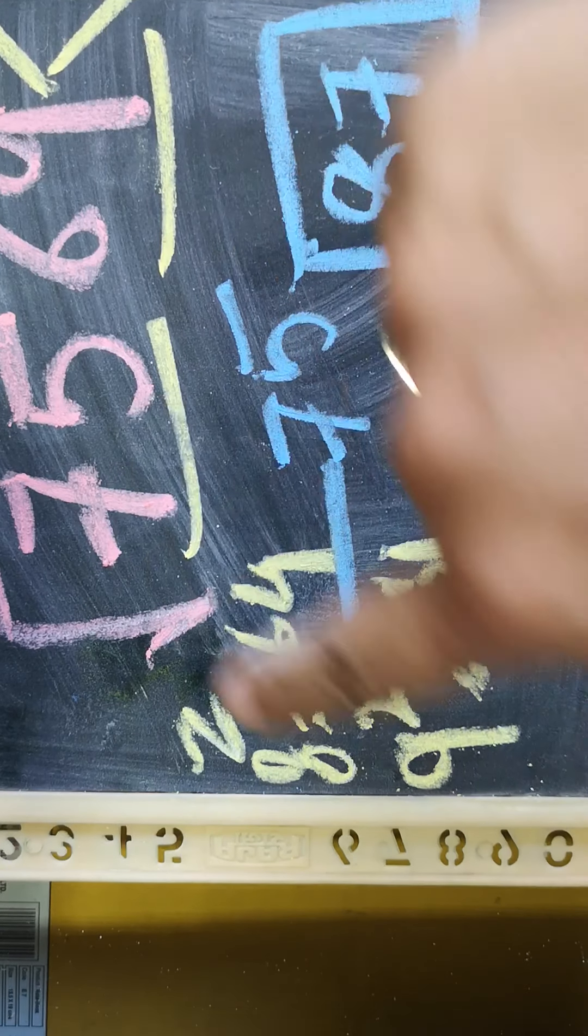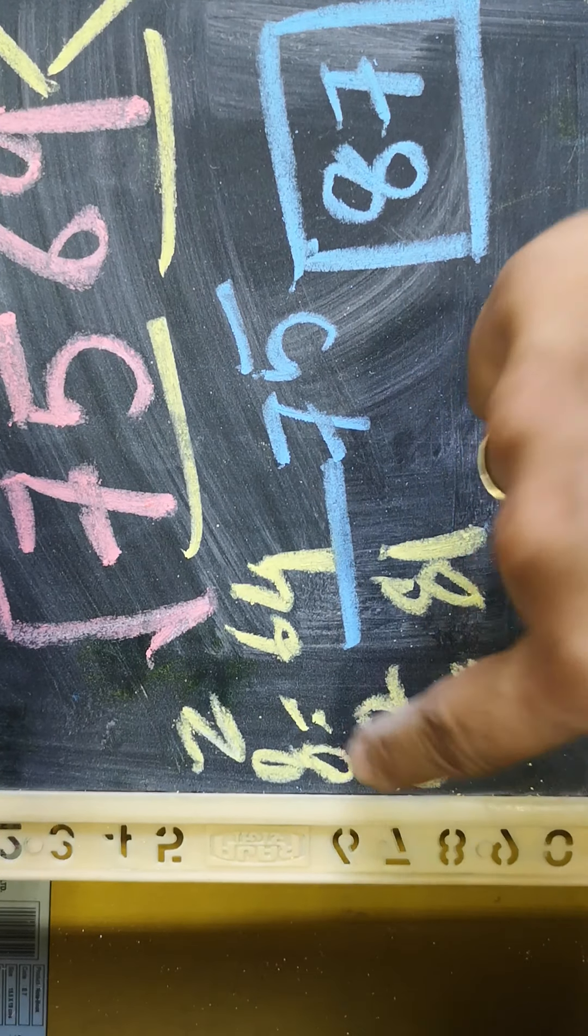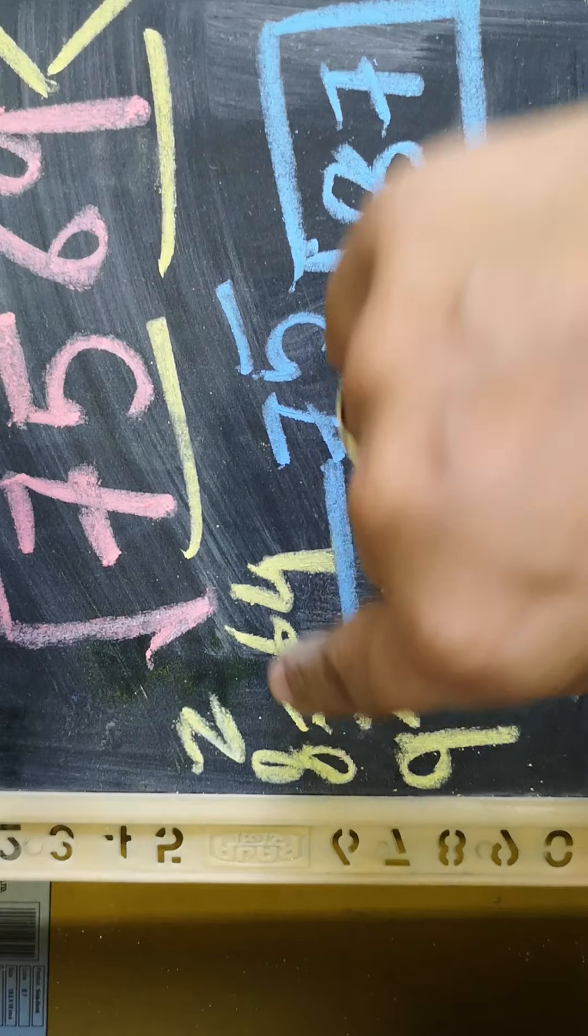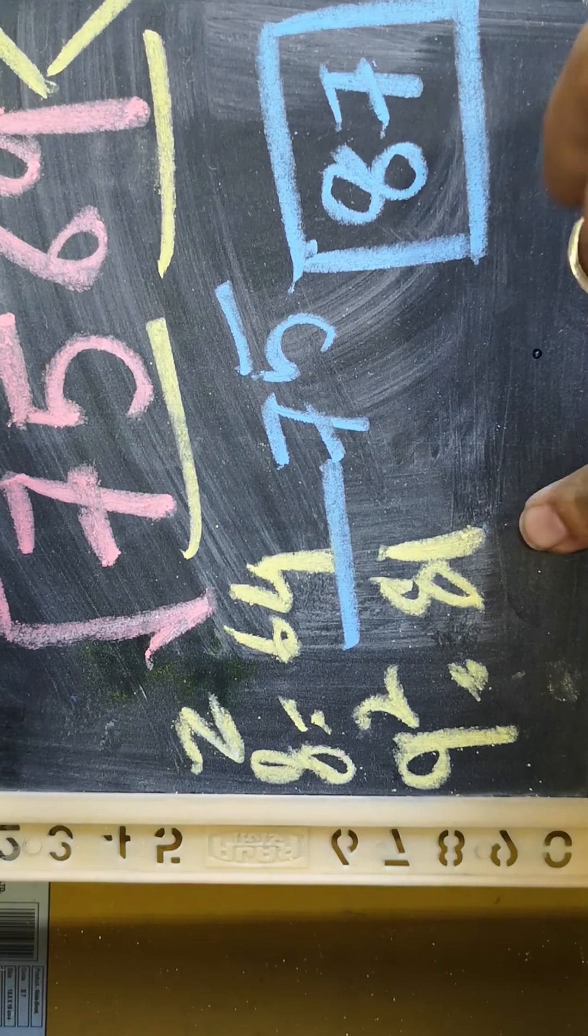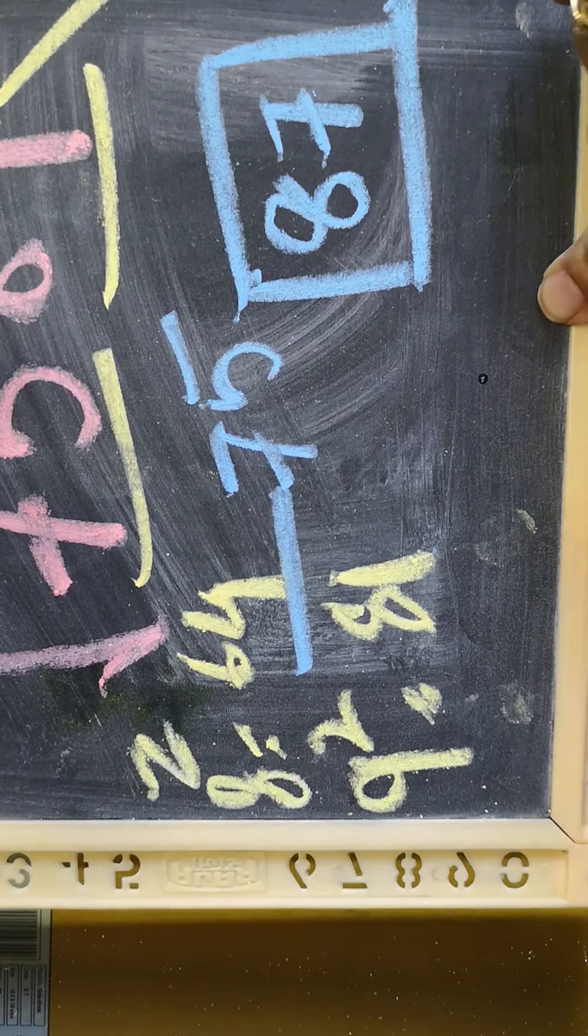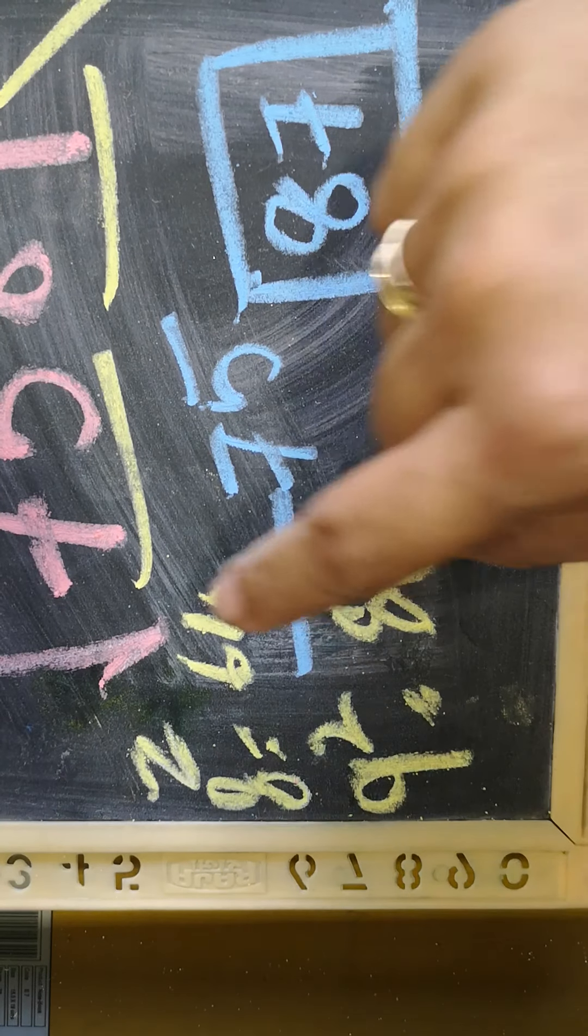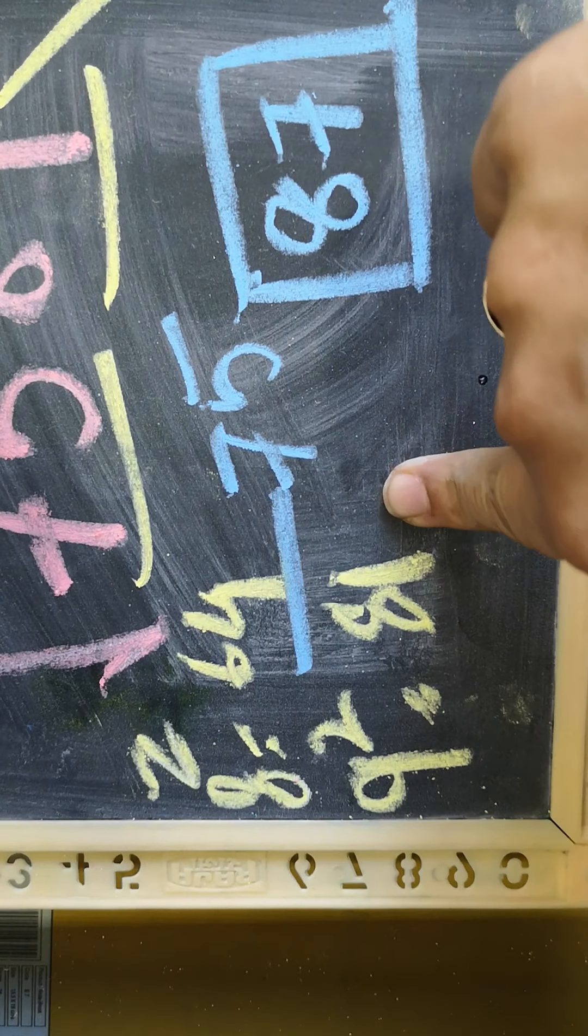So 75, it has to be 8 square or 9 square. 8 square is 64, 9 square is 81. Where does the digit 75 stand? It stands in between 64 and 81.